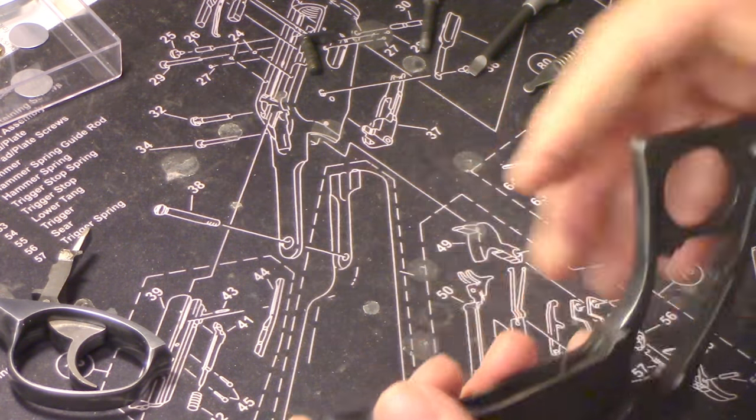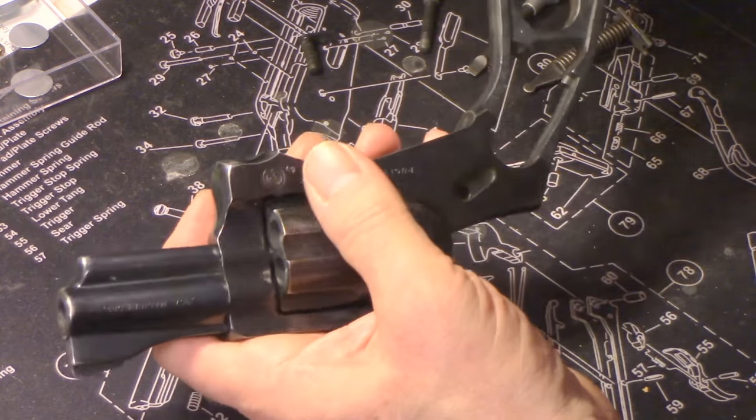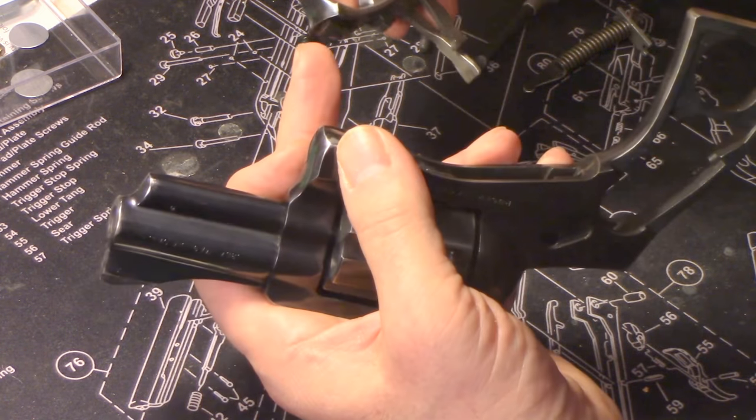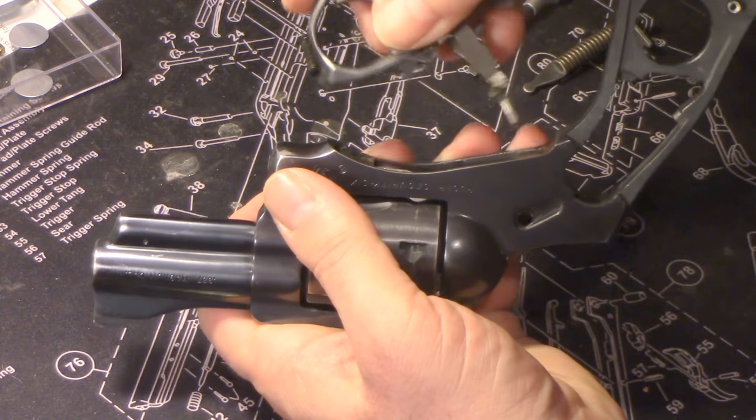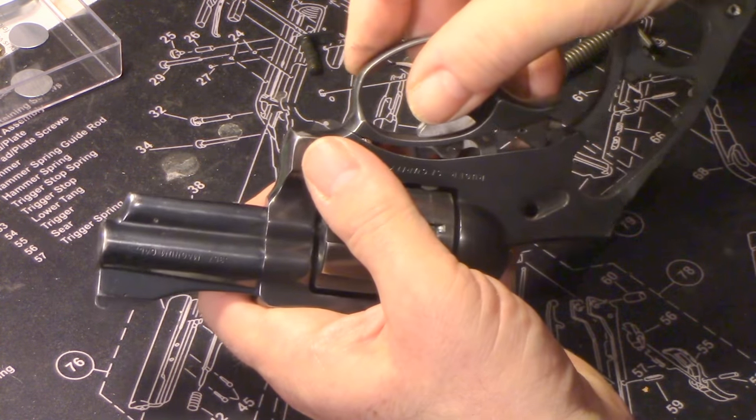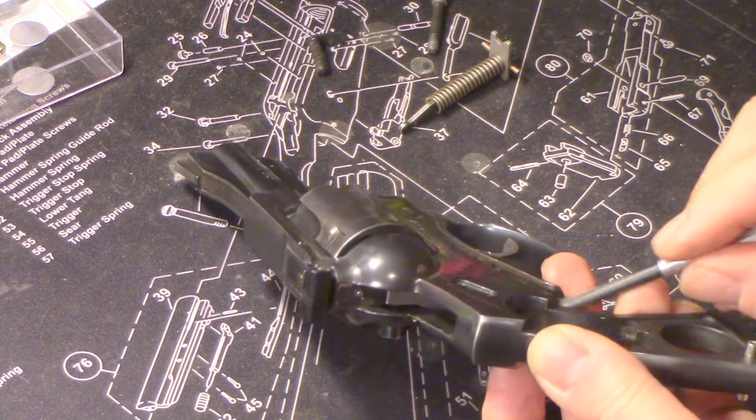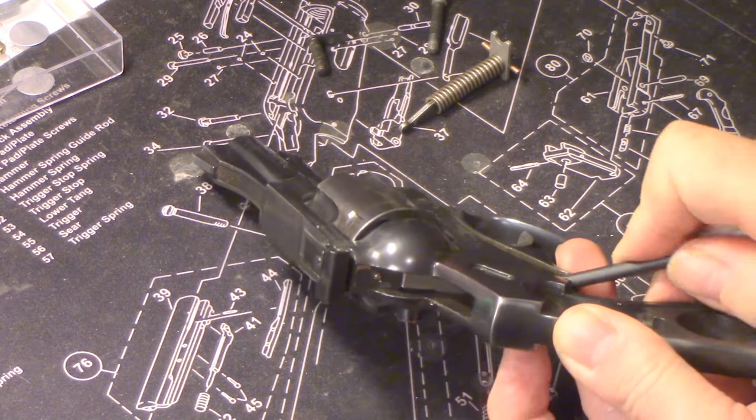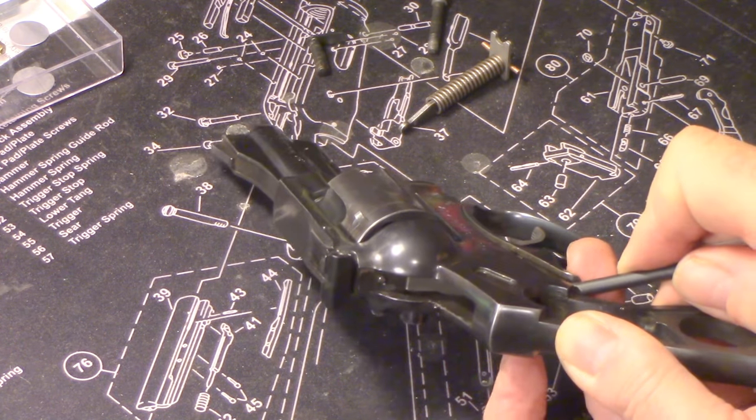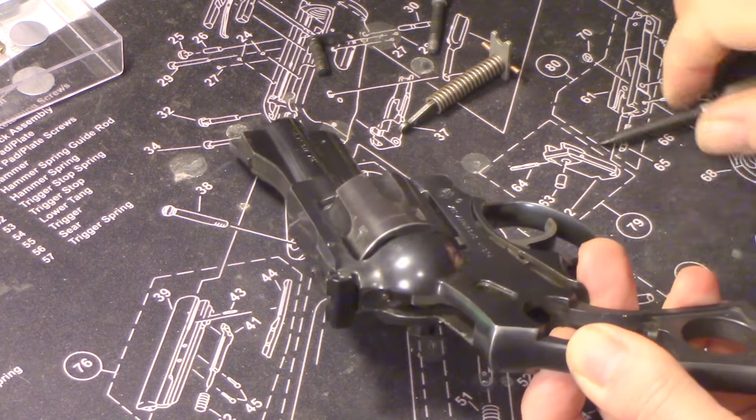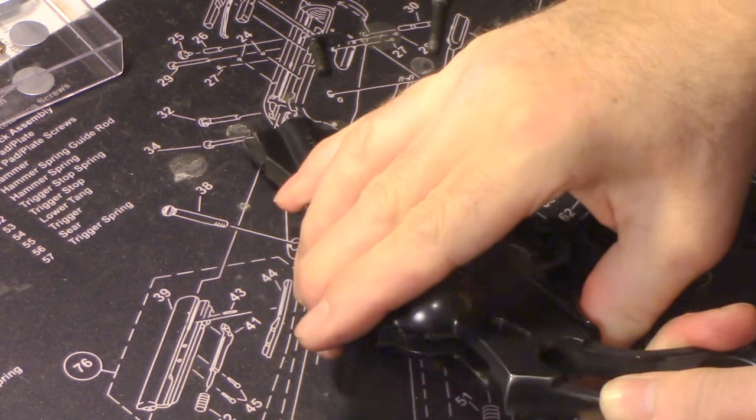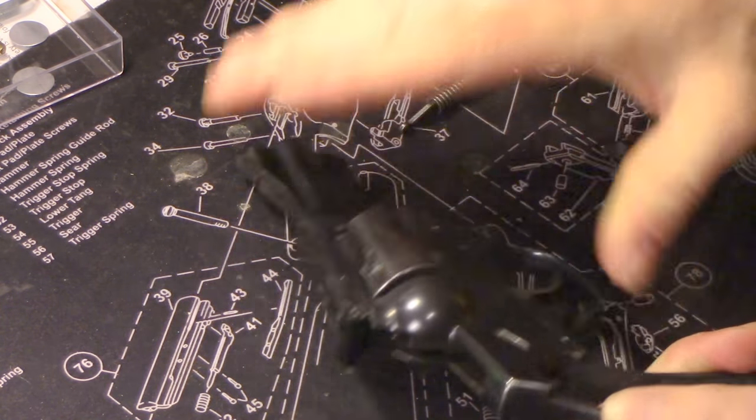Now we've got that part done. Next, we just put the trigger assembly back in. It's got a little bit of a notch there at the front. And there's that little pin that I compressed to take it apart. I'm just going to compress it a little bit from behind just to get it started, and give it good pressure, and she snaps back together.